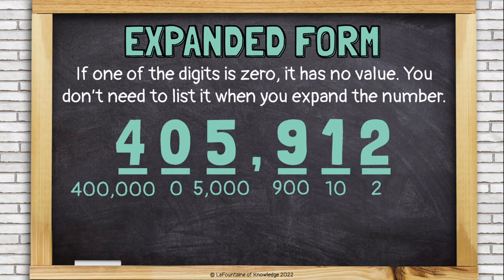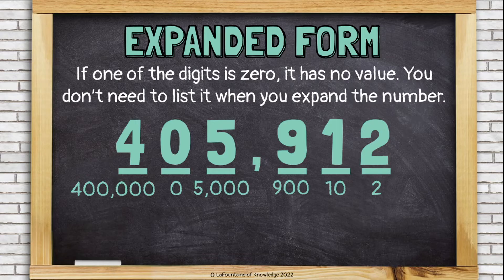Let's look at 405,912. We have our values listed. The 2 is worth 2. The 1 is worth 10. The 9 is worth 900. The 5 is worth 5,000. I have a 0 in the 10,000's place — I don't have any groups of 10,000, so that place has a value of 0.